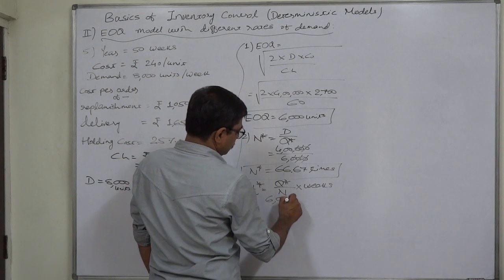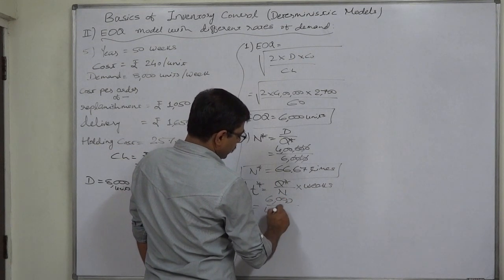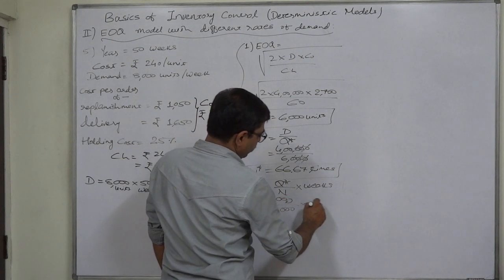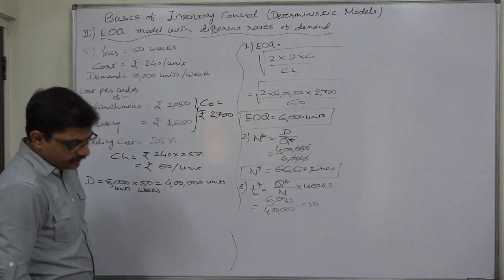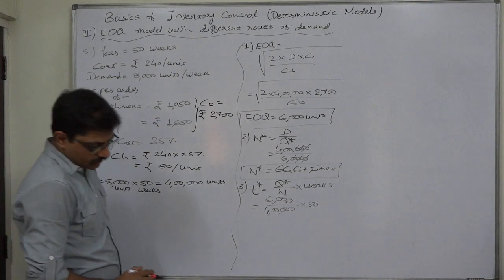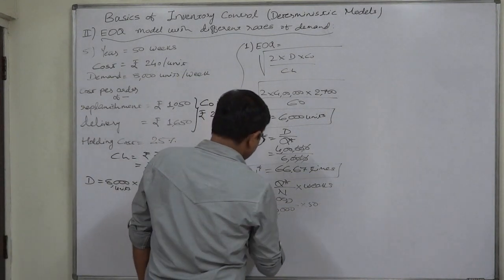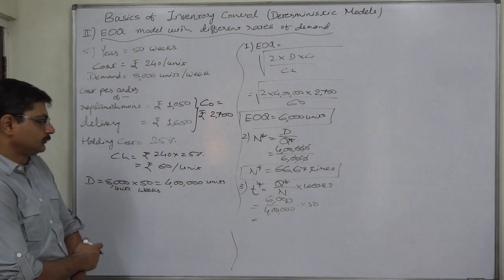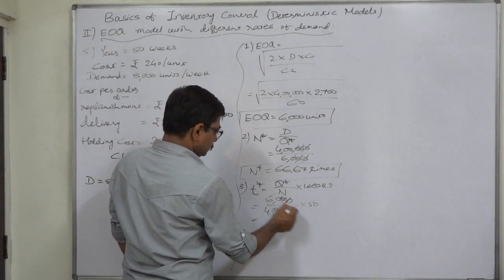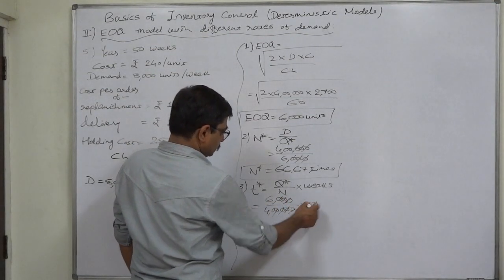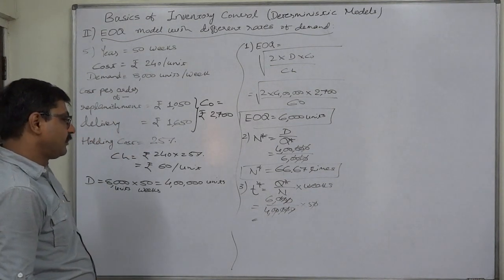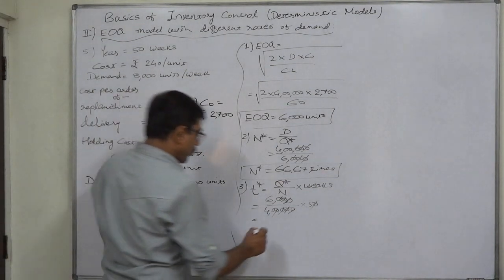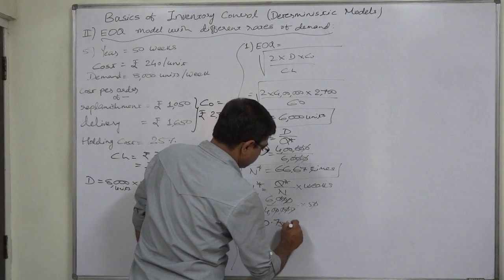6,000 divided by 400,000 into 50 weeks, because a year is made up of 50 weeks. So what will be the answer? The answer is, consider it is 6 divided by 8, 3 by 4, point 75 weeks or week rather.